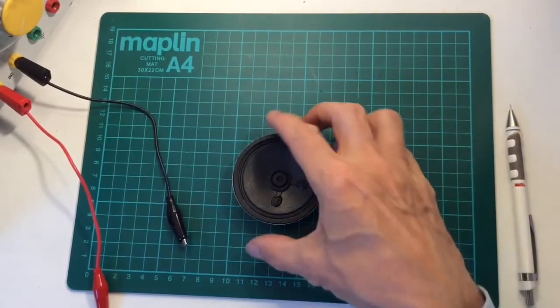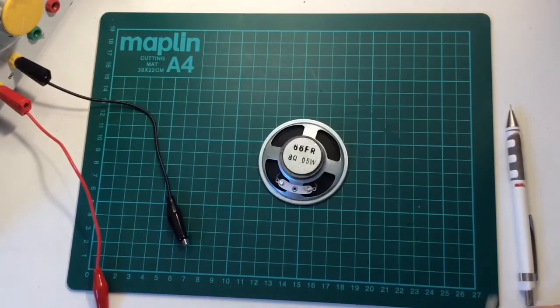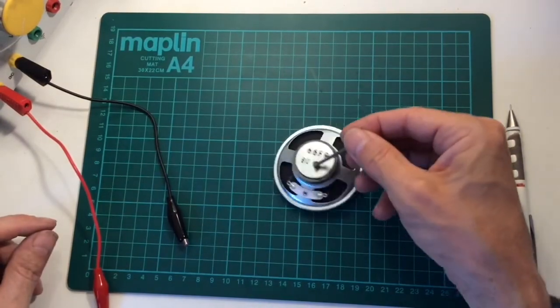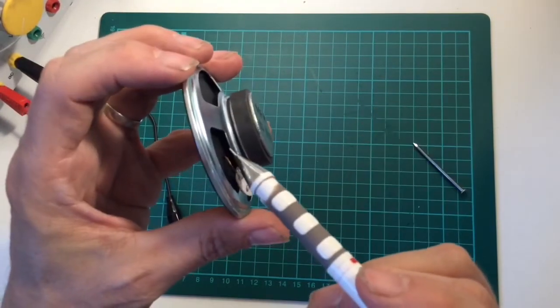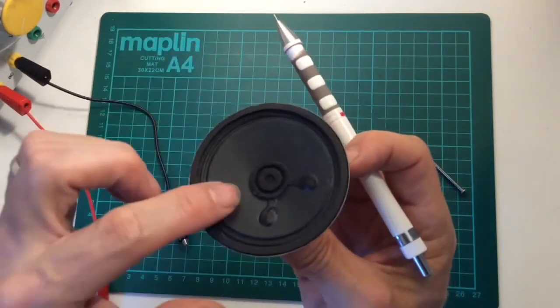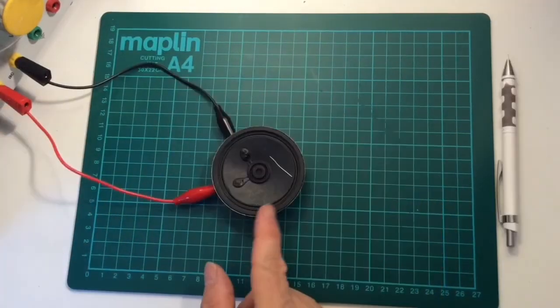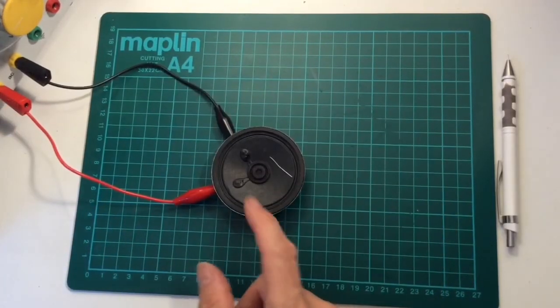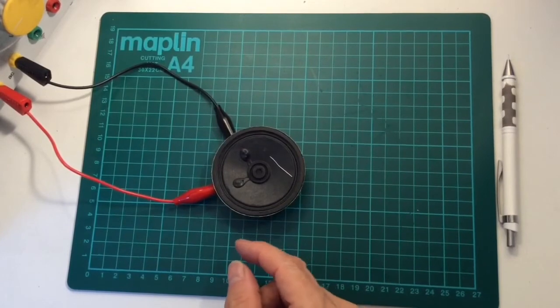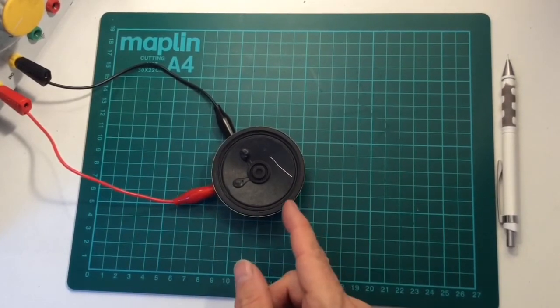Another use of the motor effect is a loudspeaker. A loudspeaker has a powerful magnet and a coil of wire inside here which is attached to a cardboard cone. If we pass a varying current through the loudspeaker coil, the coil vibrates in time with the current and it produces a sound.